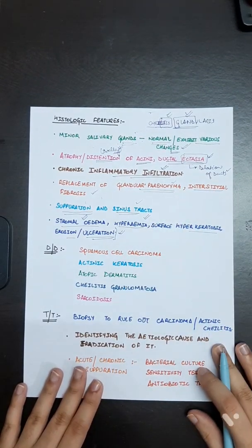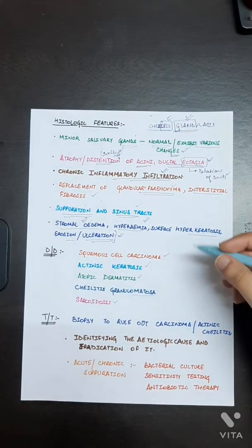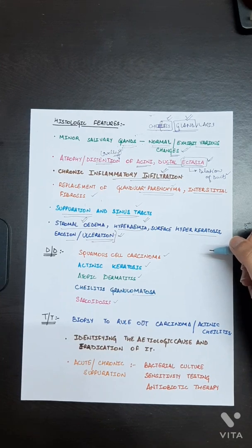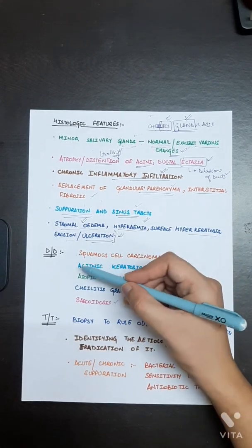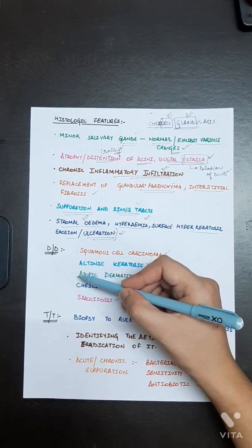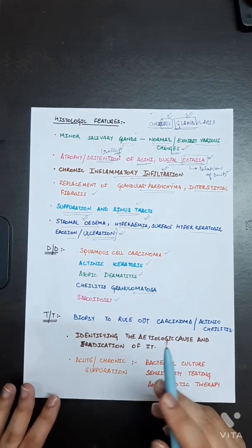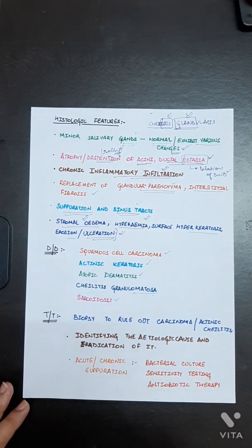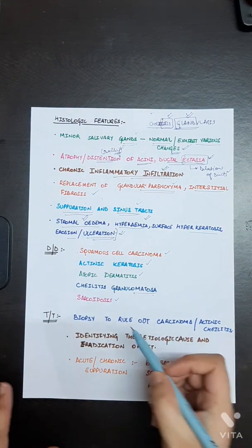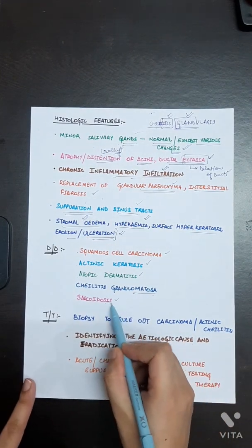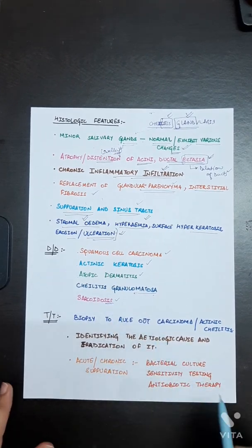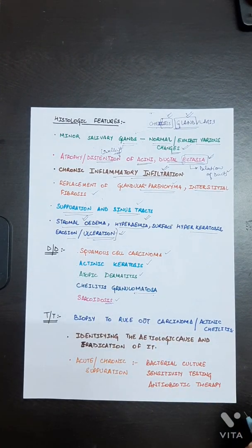The differential diagnosis of Cheilitis Glandularis includes Squamous Cell Carcinoma, Actinic Keratosis, Atopic Dermatitis, Cheilitis Granulomatosa — also known as Mishner's Melkersson-Rosenthal Syndrome — and Sarcoidosis.